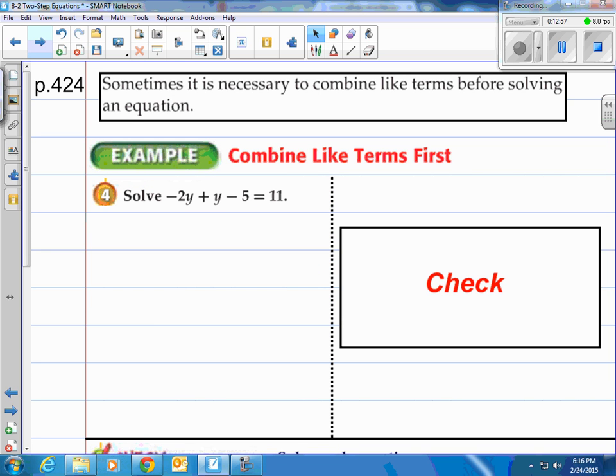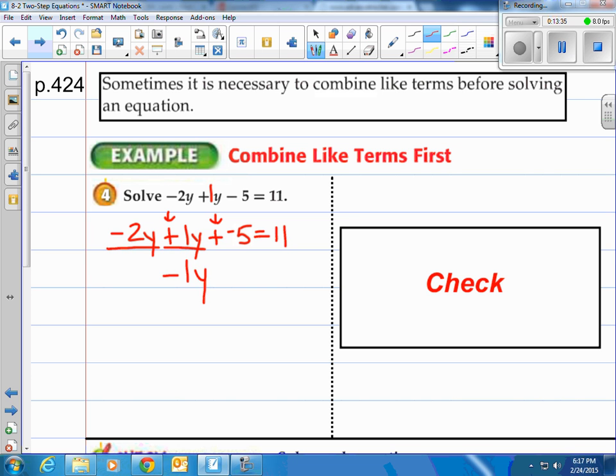Sometimes it's necessary to combine like terms before you solve any equation. So take a look at this first one. Solve negative 2y plus y minus 5 equals 11. Just like yesterday I was saying, anytime you see a letter by itself, put a 1 in front of it. I'm going to change this whole problem to negative 2y plus 1y and then plus negative 5 equals 11. I like to have all addition. Then I put things together that go together. Like this negative 2y plus 1y is negative 1y. They're like terms. I like to say same family. They go together.